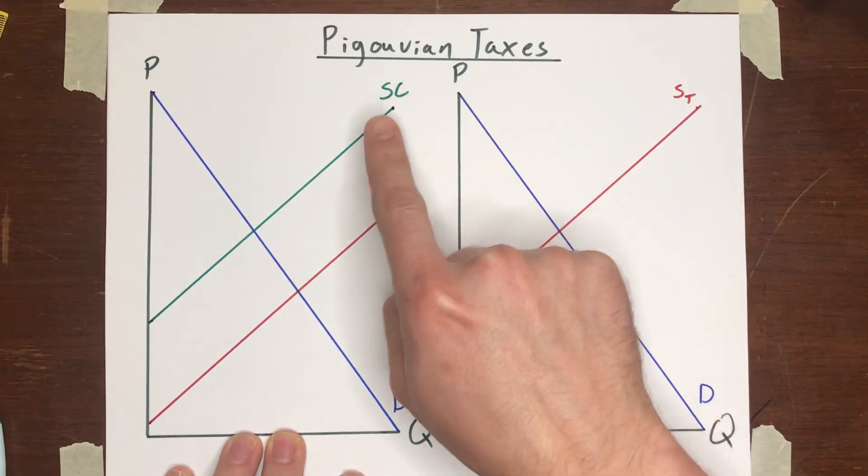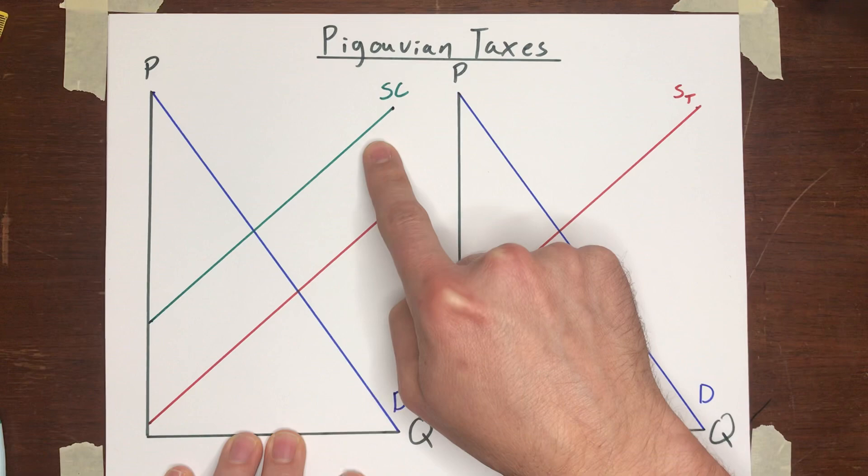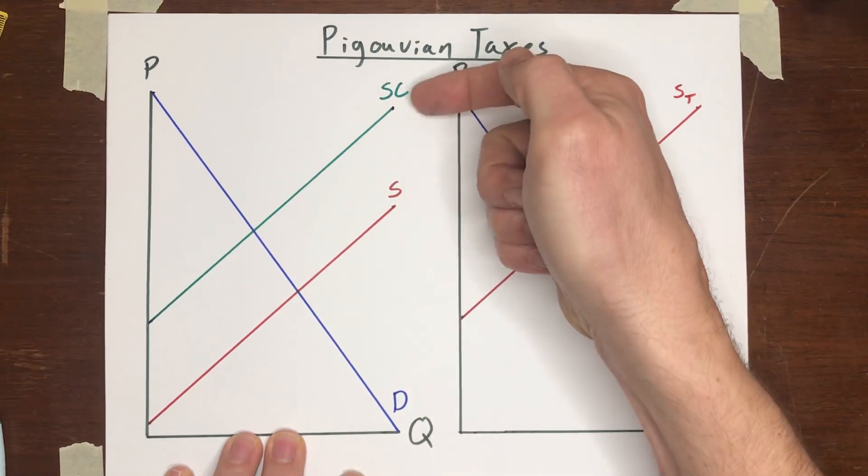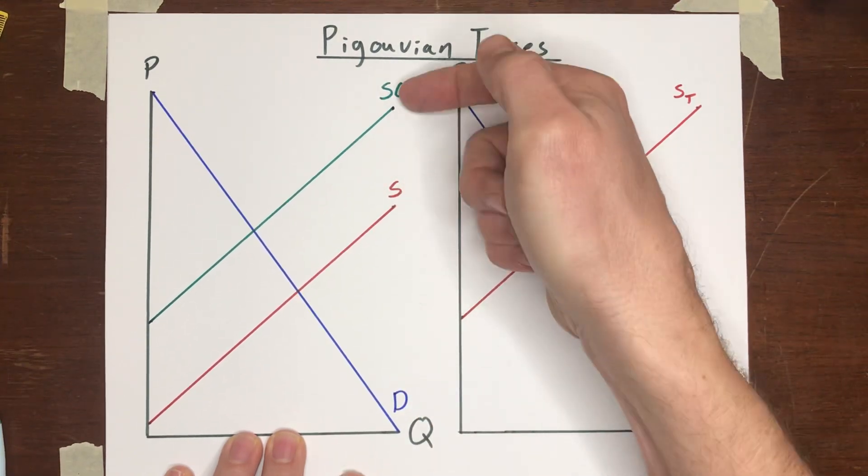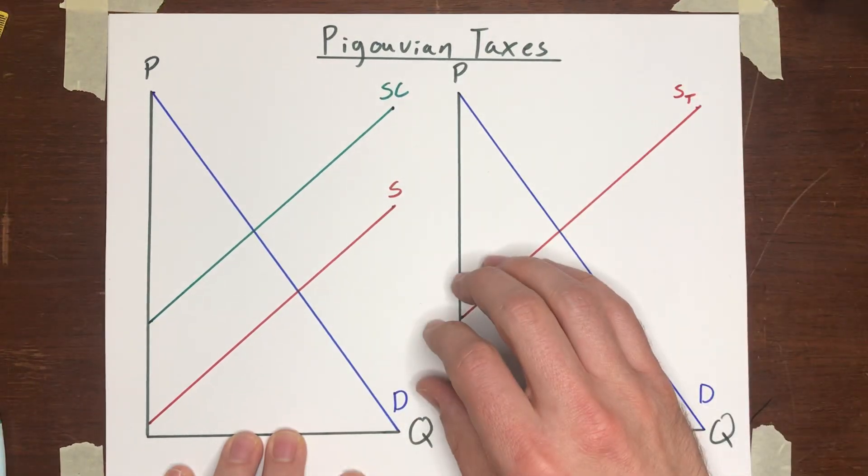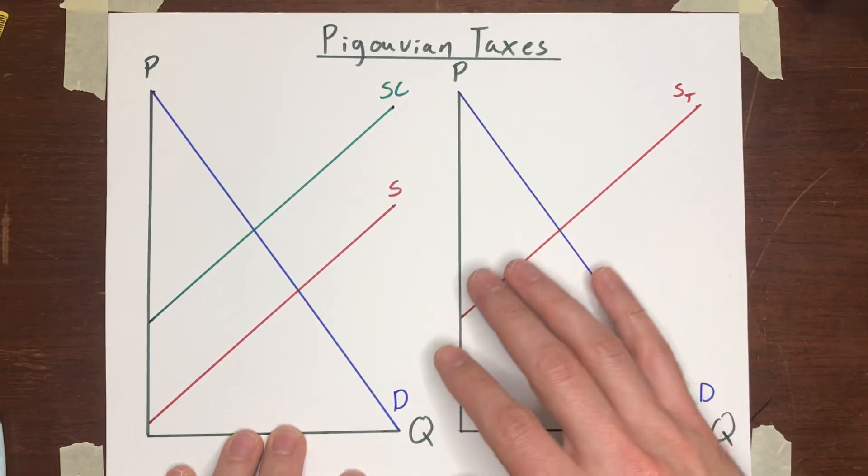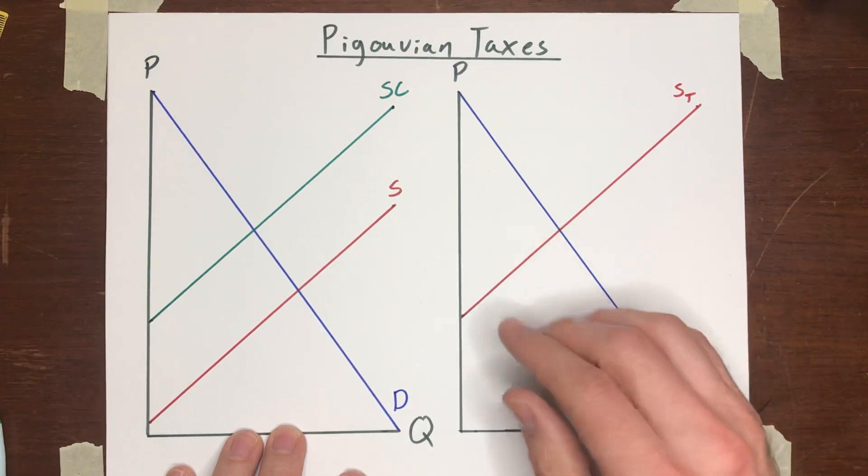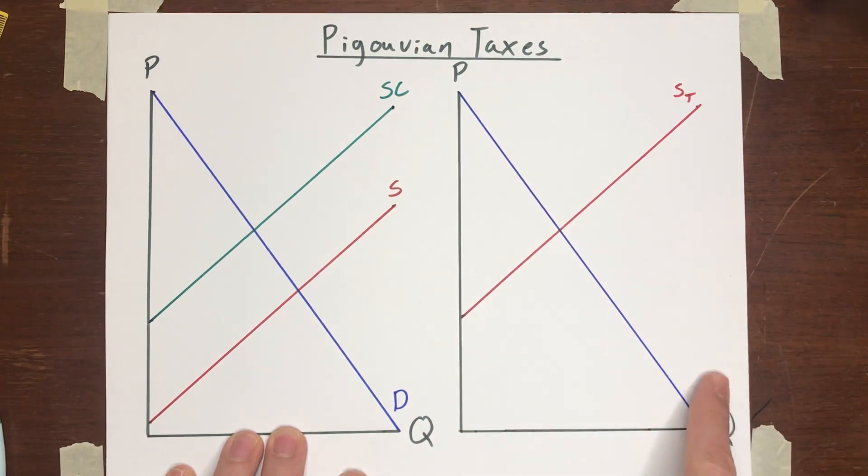Pigouvian taxes apply to a case where you have a negative externality, so the social cost is greater than the private cost, or social cost curve is above the supply curve. Subsidies are what you use to take care of markets that have positive externalities, where the social value curve is above the demand curve. I'm going to start by talking about Pigouvian taxes.